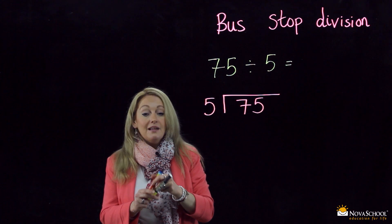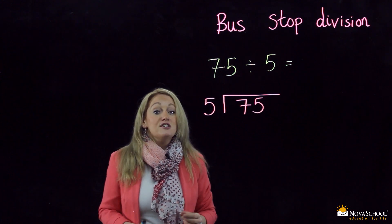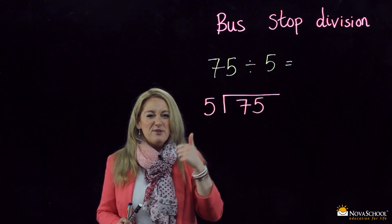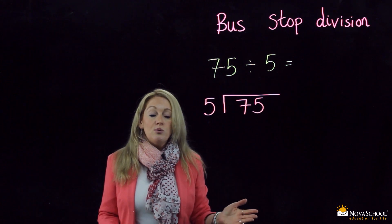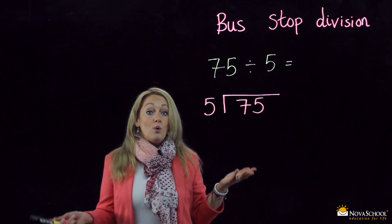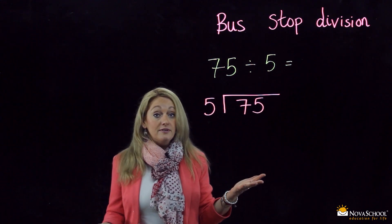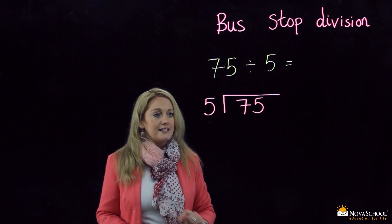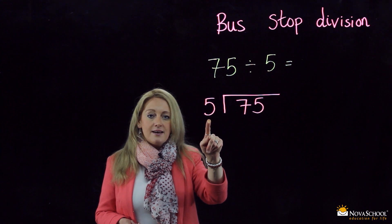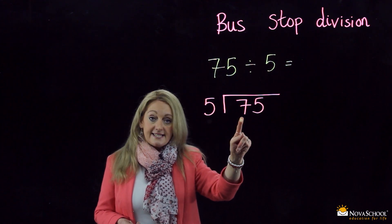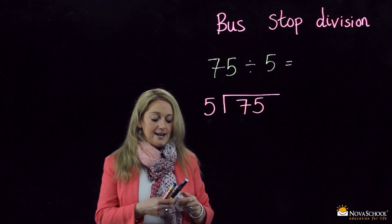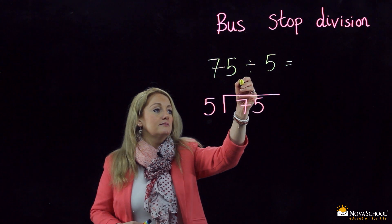Now the key to division is your multiplication tables. Five times tables — nice and easy. So we work out how many fives are in 75. We could count up, but this is much quicker. Step one: we take the five and we think, how many times can I put five into seven? Well, I can only put five into seven one time, so we place a one above the seven.